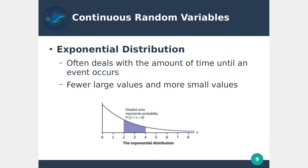In an exponential distribution, there are fewer large values and more small values. You're less likely that x will be 8, and more likely that x will be 1, because the curve is larger near 1. If this chart were flipped, you'd have a low curve around 1 and it would exponentially grow to 8, making 8 far more likely. Exponential curves basically go one direction and usually go up or down very quickly.